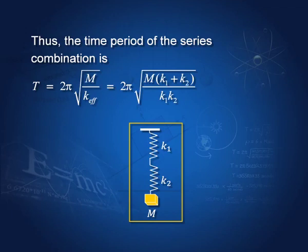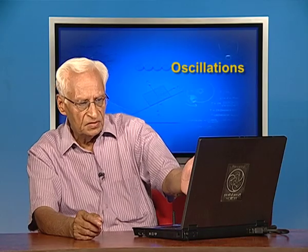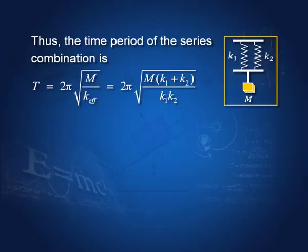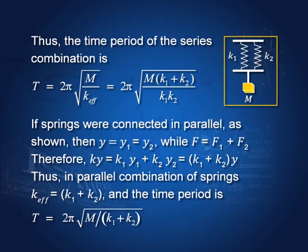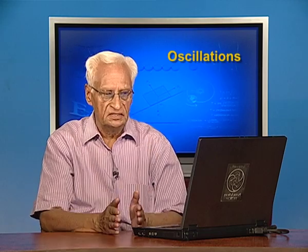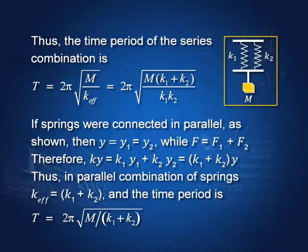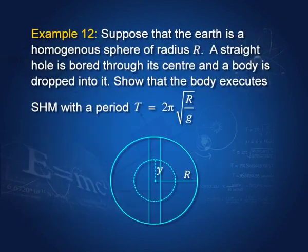The same two springs can be arranged in parallel. In a parallel arrangement the effective spring constant is the sum: k_effective = k₁ + k₂, and the time period is 2π√(m/(k₁+k₂)).